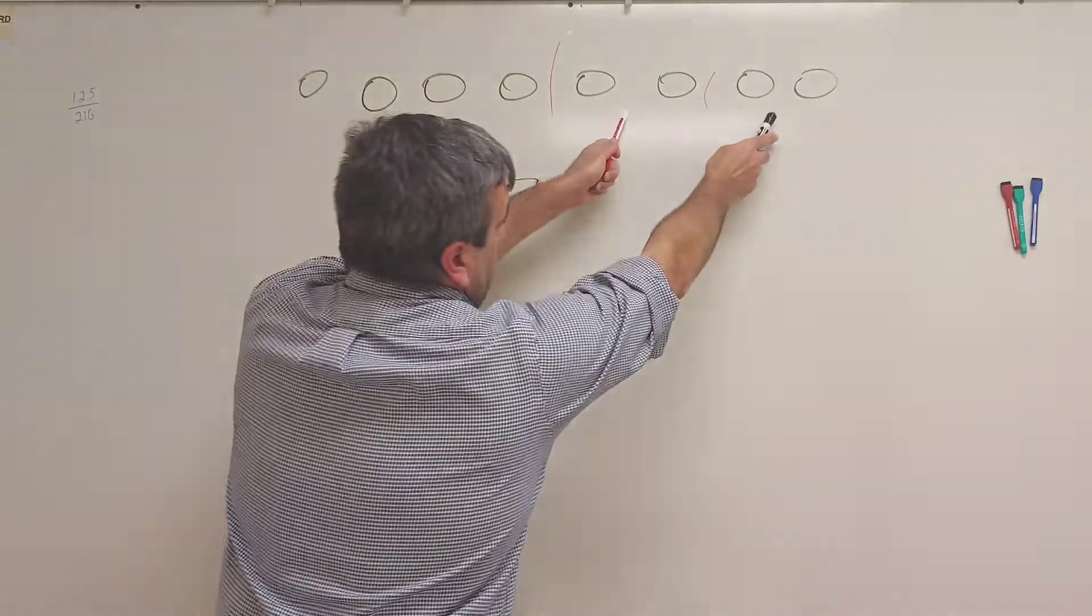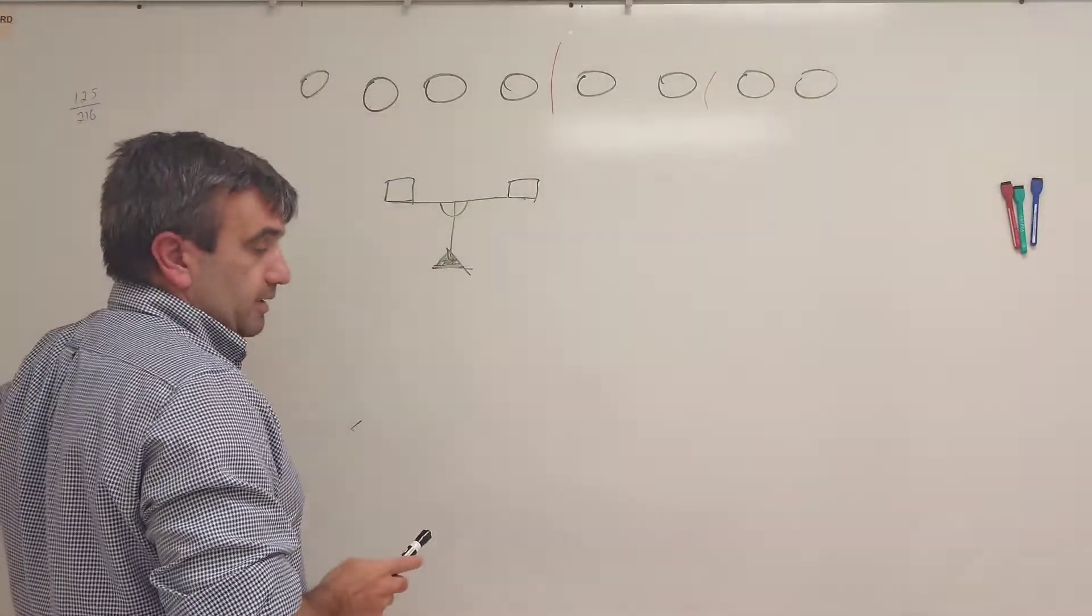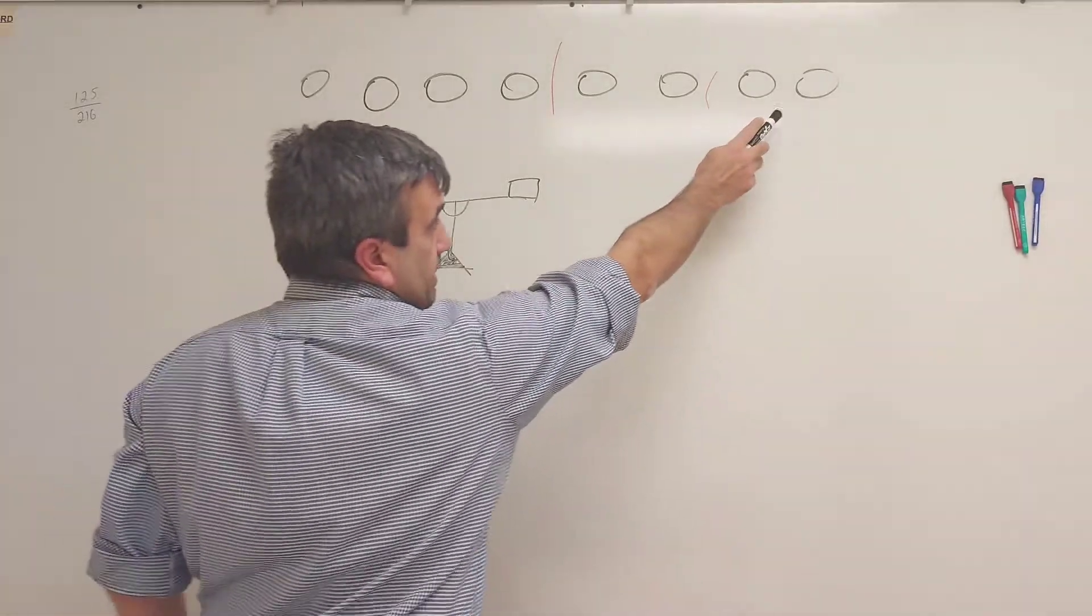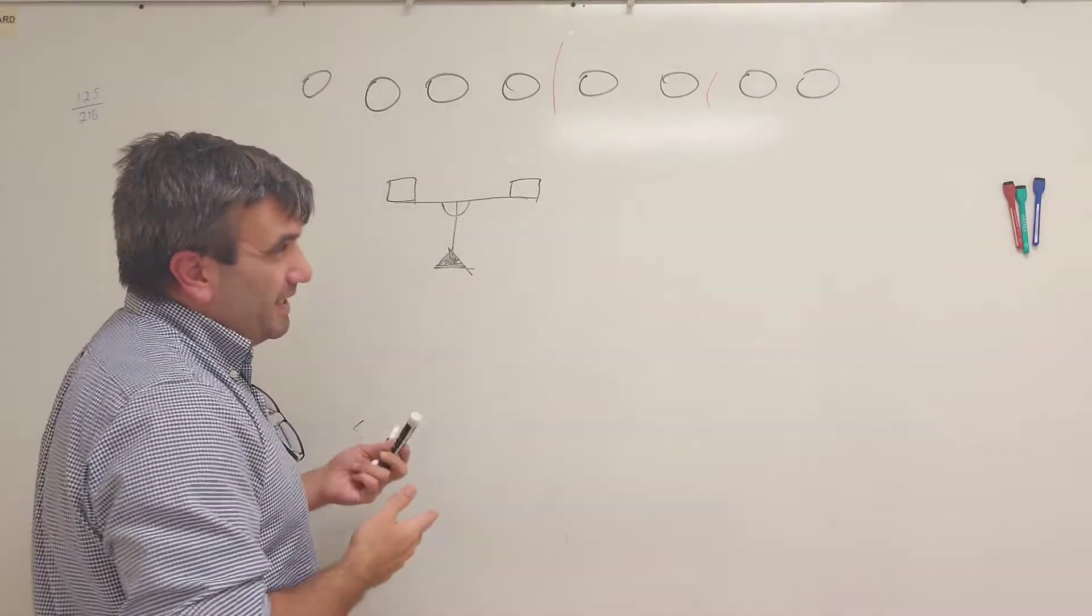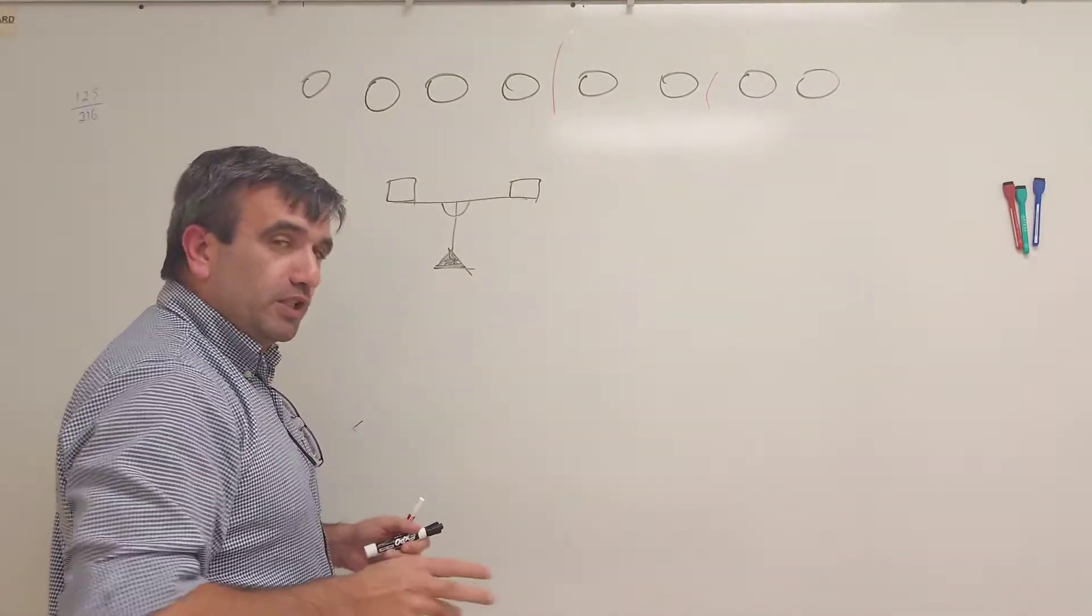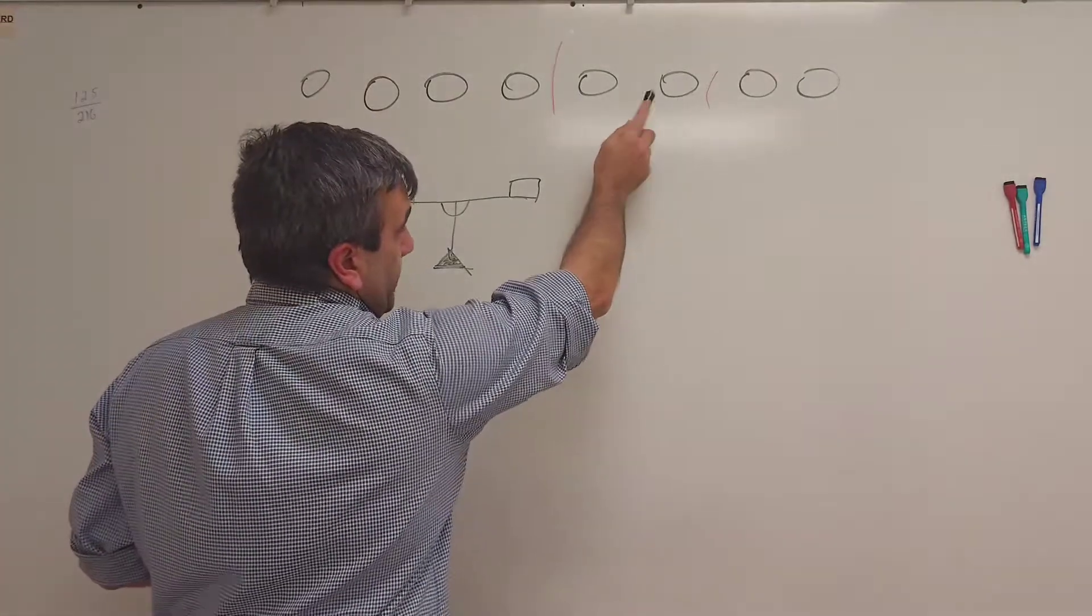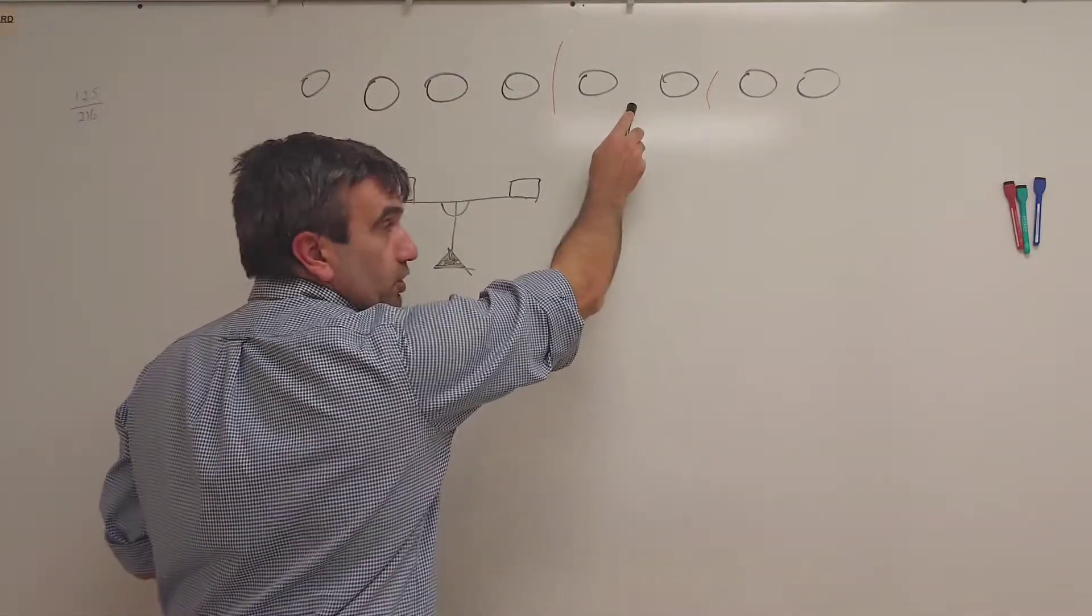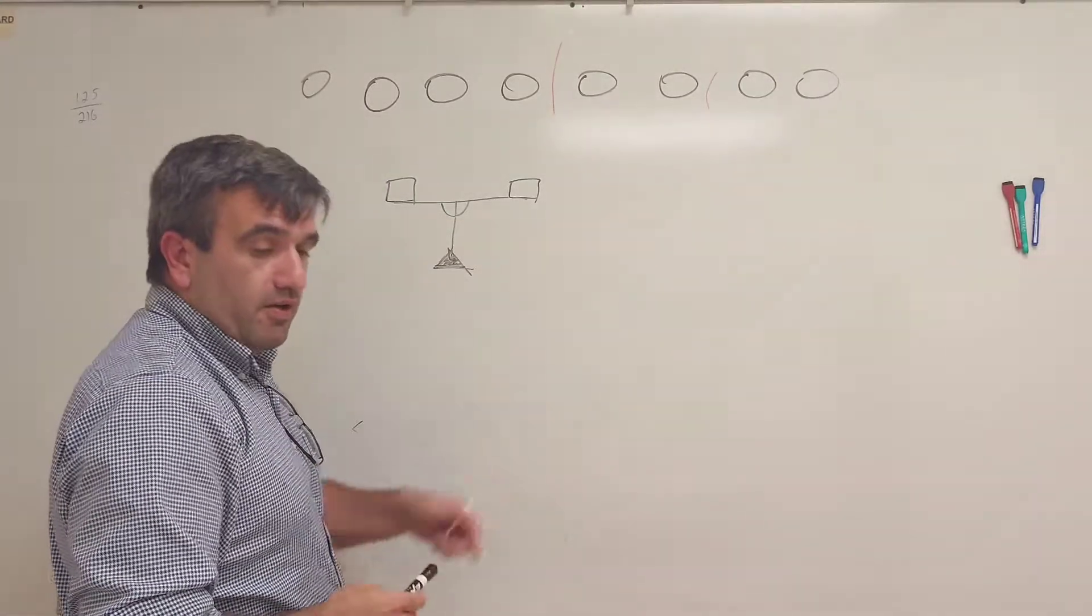We're gonna put this group on the left and this group on the right. But it means we have to do it three times, right? If the fake coin is here, you have to measure this group and it will be the third measurement, so it's not gonna work.